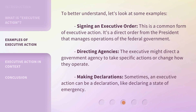To better understand, let's look at some examples. Signing an executive order — this is a common form of executive action. It's a direct order from the president that manages operations of the federal government. Directing agencies — the executive might direct a government agency to take specific actions or change how they operate.